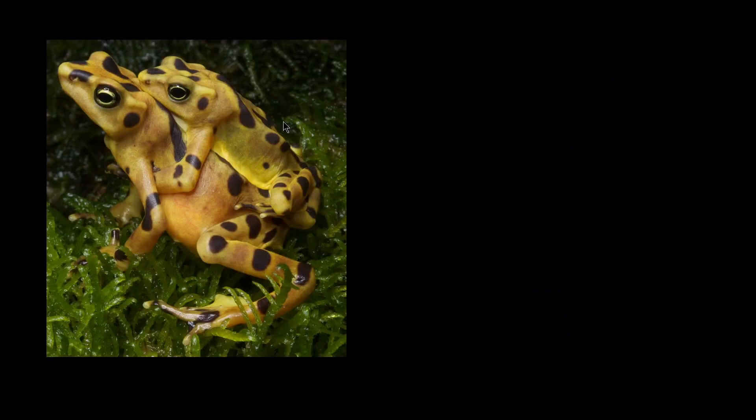In amphibians, the sexes are separate, meaning you have two different animals representing a female and a male. We can see that the male frog is usually smaller. So this is actually the male and the bigger one here is the female.